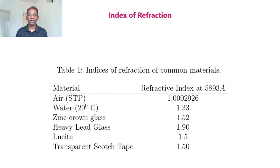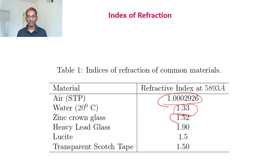We know that the velocity of propagation of electromagnetic waves in vacuum is greater than that in a medium. From this observation, we can find that the refractive index is always greater than or equal to 1, which also implies that epsilon is greater than or equal to epsilon zero. This table shows the refractive indices of some common materials — for air it is 1, for water it is 1.33, and for glass it is around 1.5.